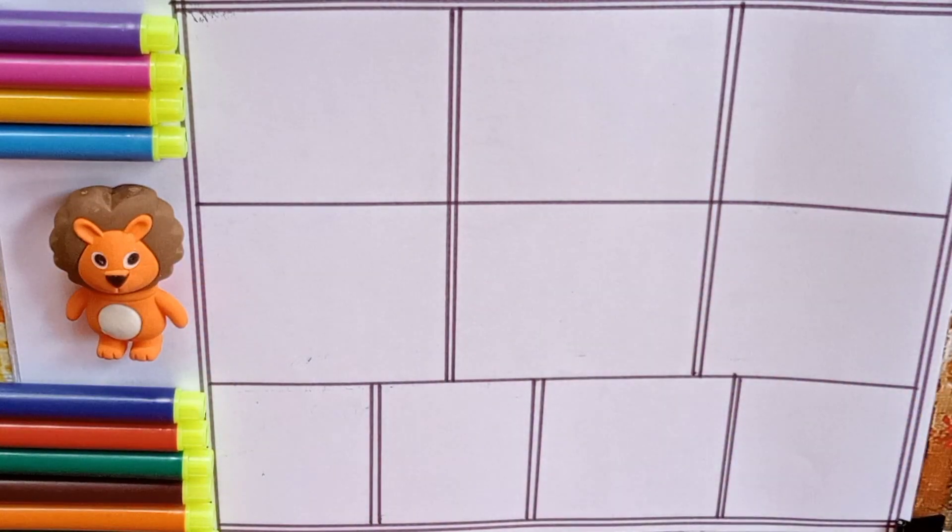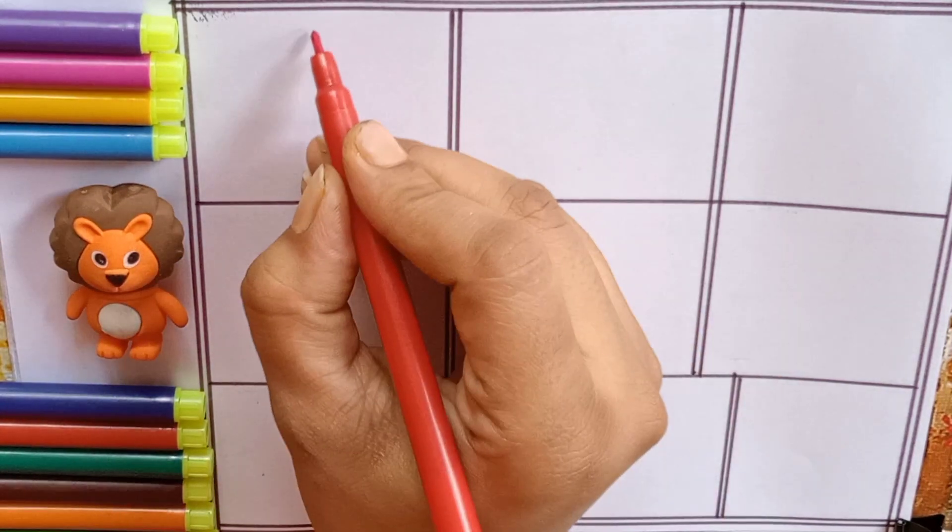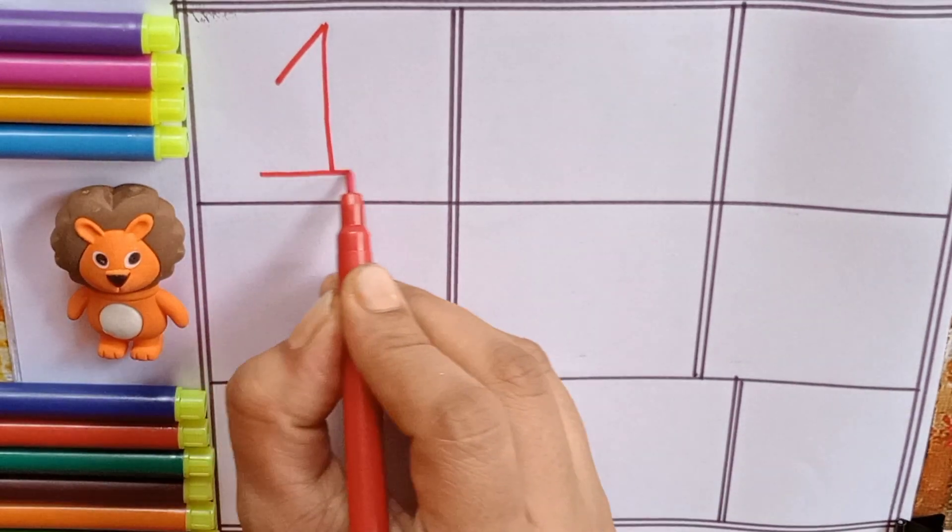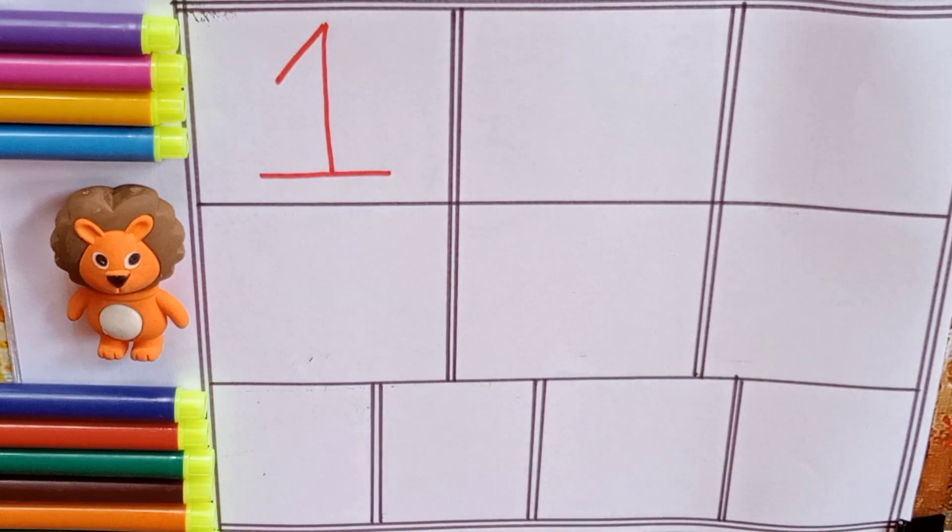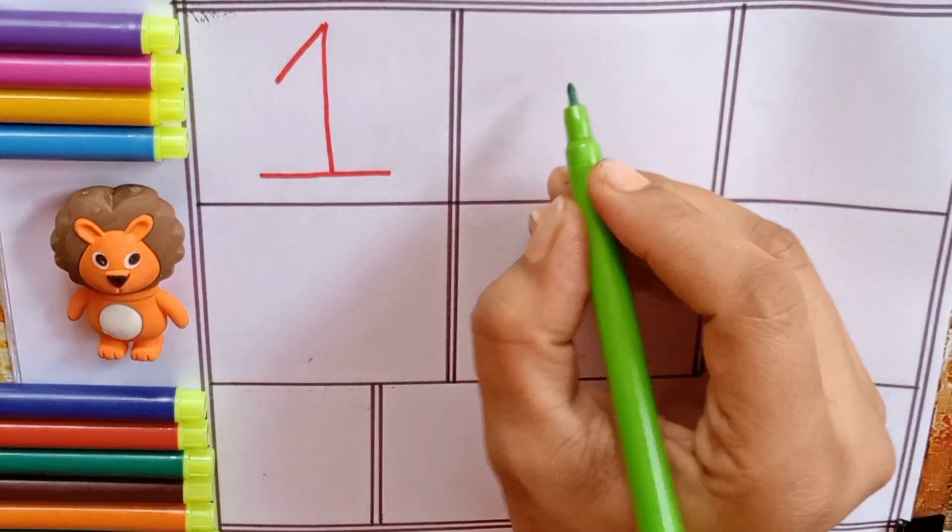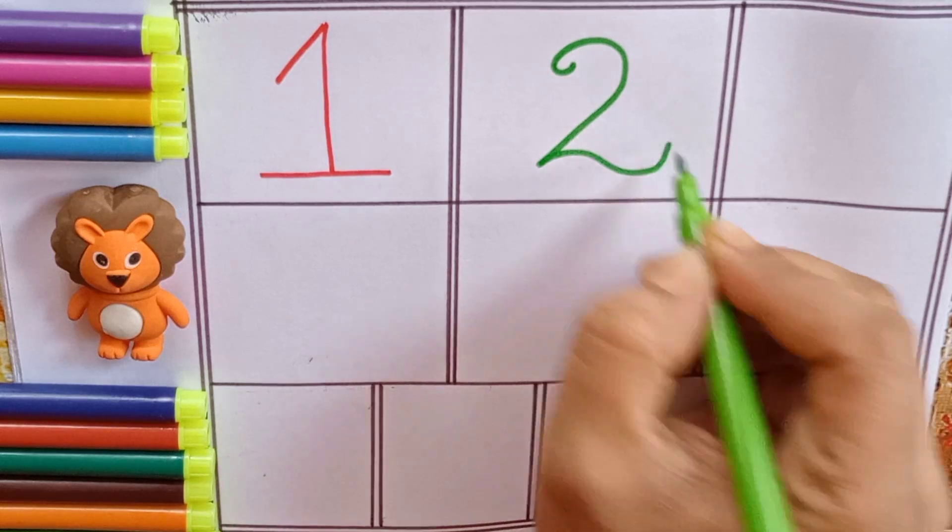Let's learn numbers. Red. One. O-N-E. One. Light green. Two. T-W-O. Two.